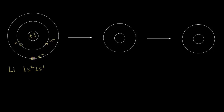If we apply enough energy, we can pull away this outer electron. We call this the first ionization energy, and to pull away that electron takes approximately 520 kilojoules per mole. Once we've pulled that electron away, we no longer have a neutral lithium atom. We would have a lithium ion — still three positive charges in the nucleus, but only two negative charges. Three minus two gives us plus one, so this is the lithium +1 cation, and the electron configuration would be 1s2, because we lost the electron in the 2s orbital.